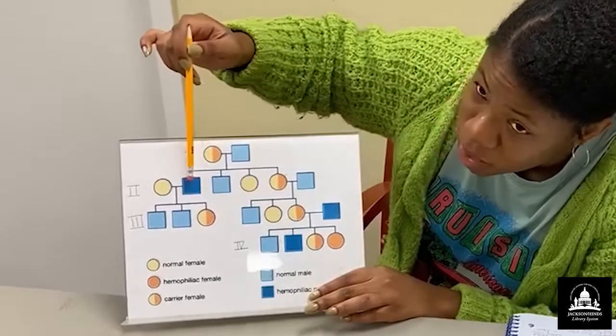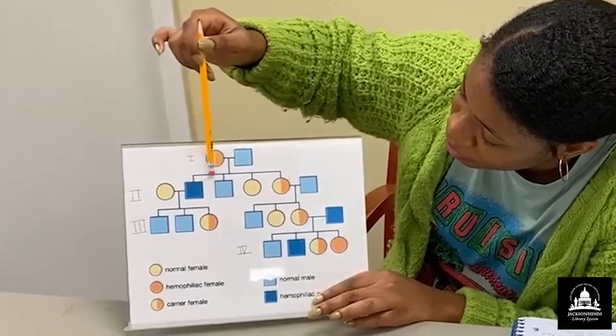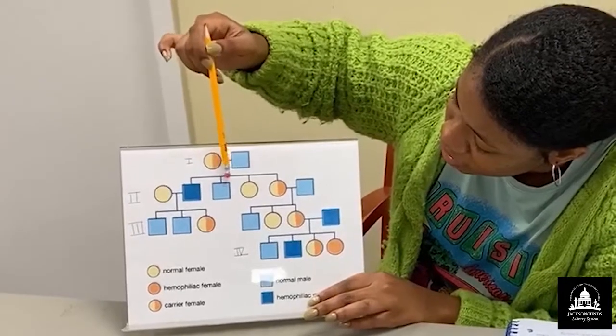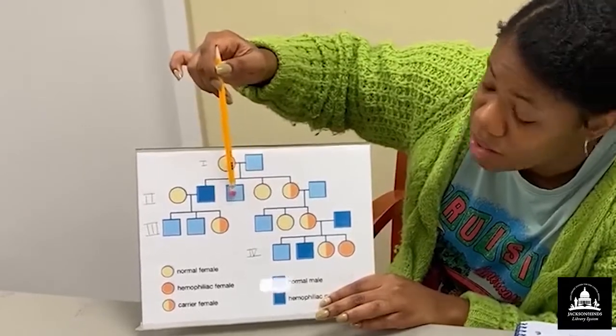So the first offspring or child. And this is showing a male. Okay. Follow this line. Come back to this point. All right.